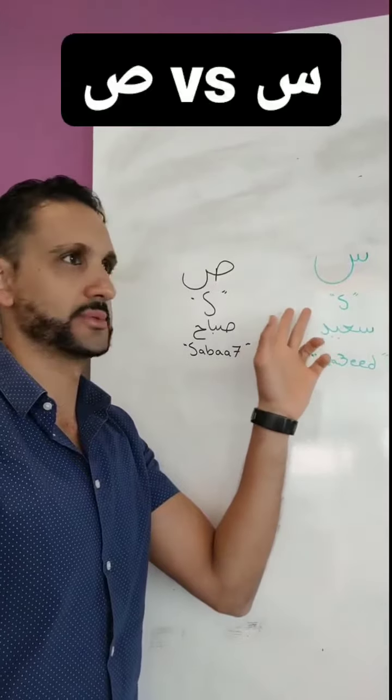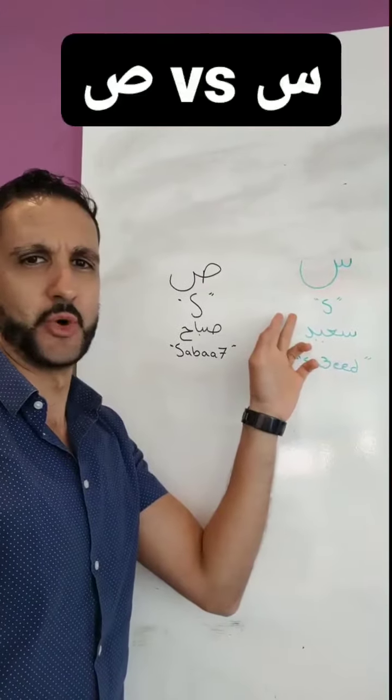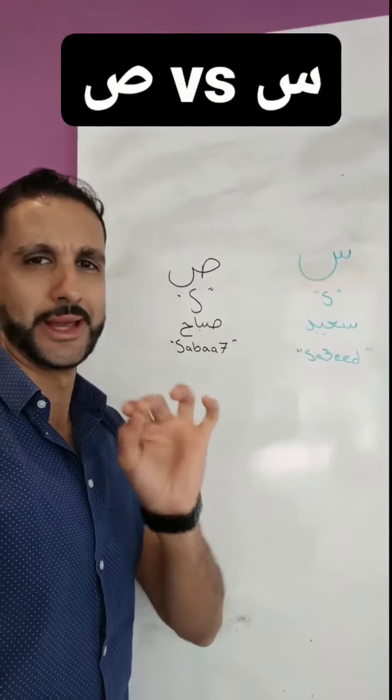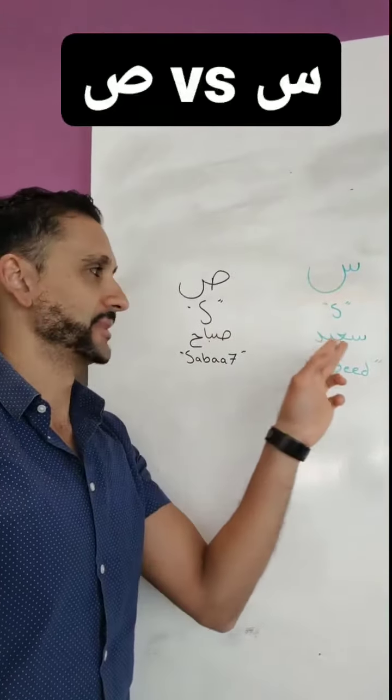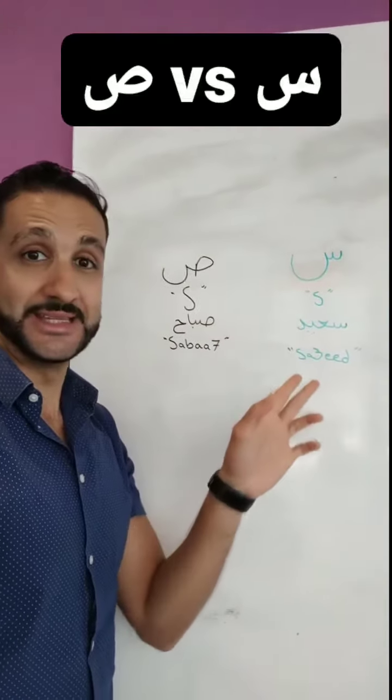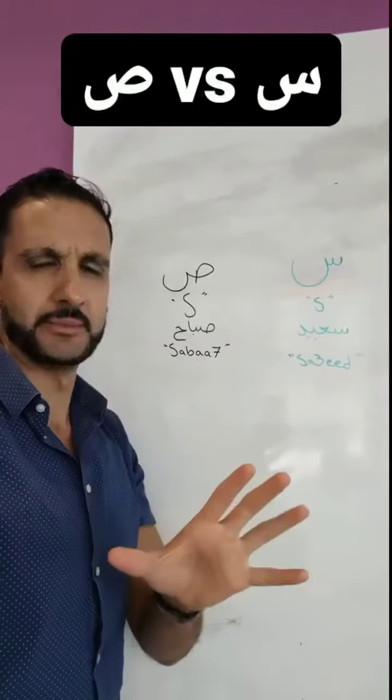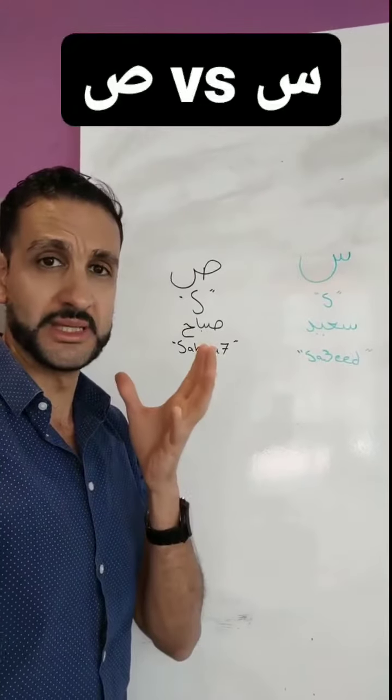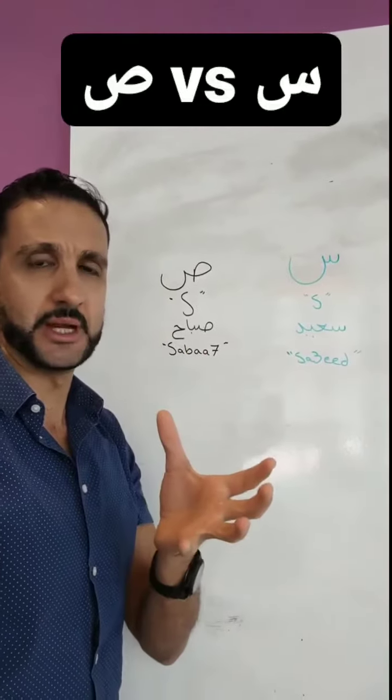It's also represented by a small S or a light S, like the name Saeed — a very common Arabic name that also means happy in Arabic.